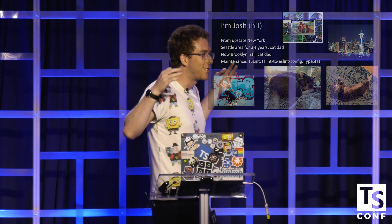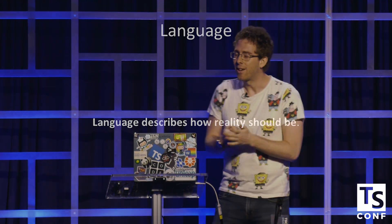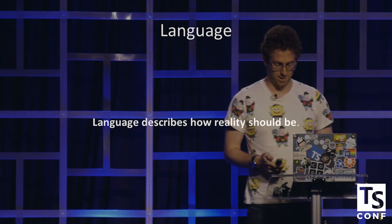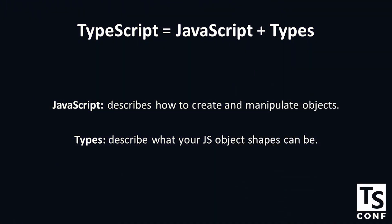I want to talk to you about language. Language describes how reality should be. It tells the computer this is what we want you to do. So TypeScript is two languages, really. It's JavaScript, the entire JavaScript language in and of itself, which allows you to create and manipulate objects.